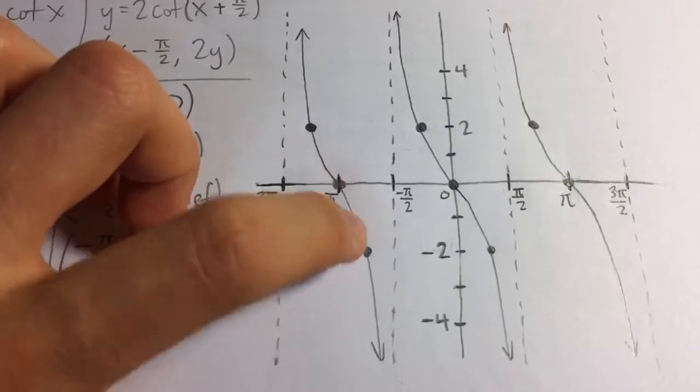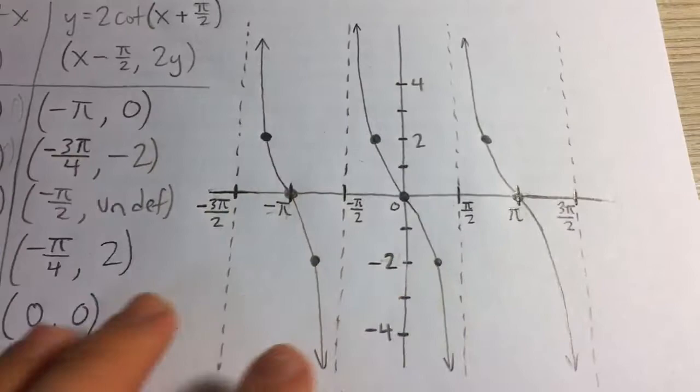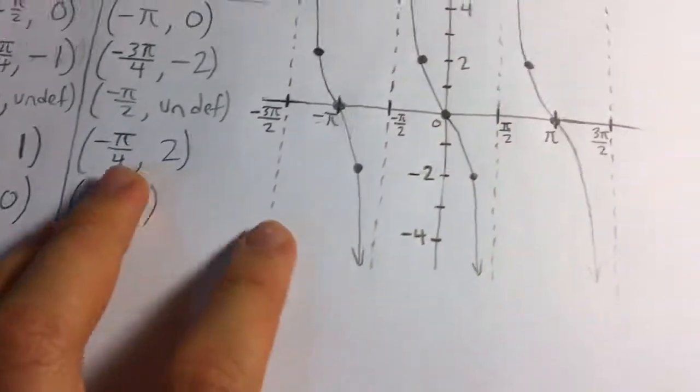So here's the five points I plotted here, here, the asymptote here and here, and you know that the period of the tangent function is pi so it's going to repeat itself every pi and so